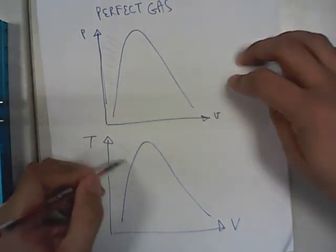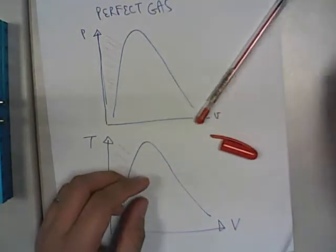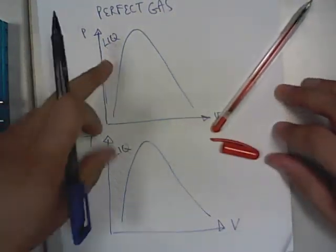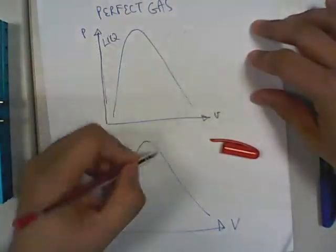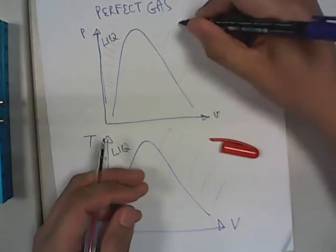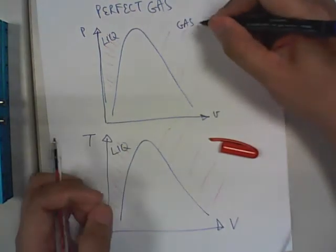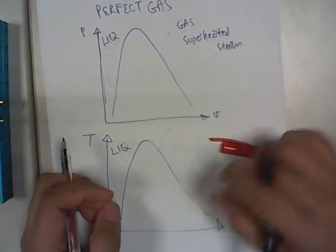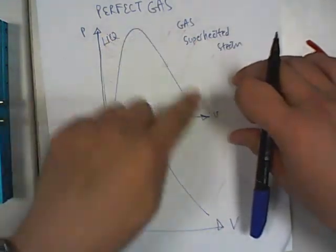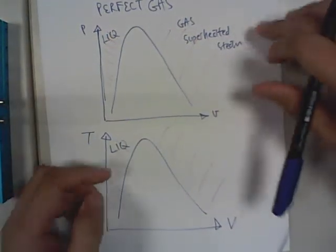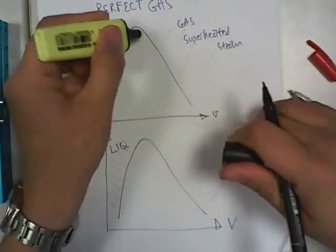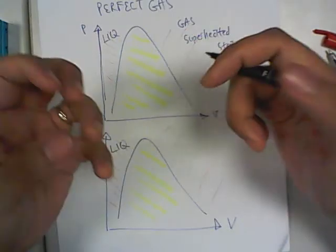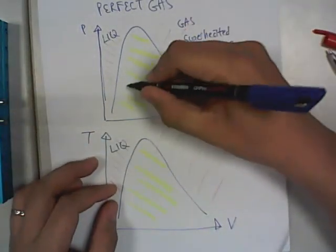To the left side of the hill is your liquid state — it's just water. To the right side of the hill is all gas, and we call it the superheated steam. Under the hill is the magical area whereby two phases exist — a mixture of gas and liquid. We call this the wet steam.